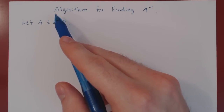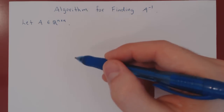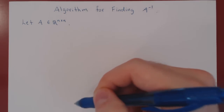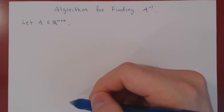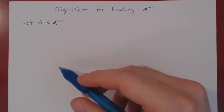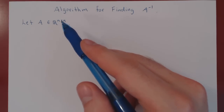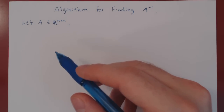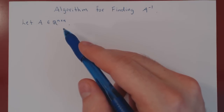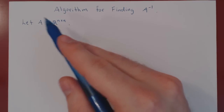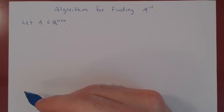An algorithm is simply a finite sequence of steps. Here we'll see how row reduction will allow us to determine if A is invertible or not, and if it is invertible, it will give us the inverse.